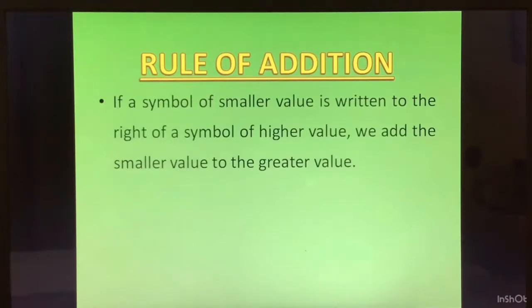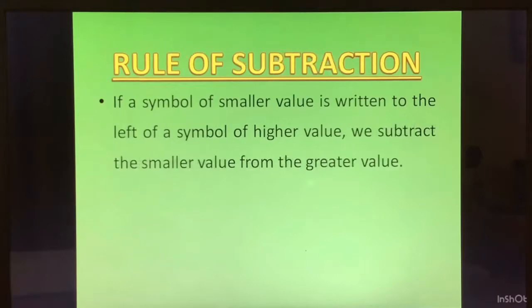Rule of addition. If a symbol of smaller value is written to the right of a symbol of higher value, we add smaller value to the greater value. Look at the example: X, I. I is on the right side of a greater value 10. So we can add the two numbers: 10 plus 1 is equal to 11.